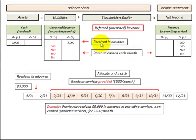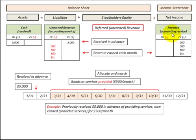To review: we receive a payment in advance of providing a service, so we credit unearned revenue and debit cash. Then as we begin to provide the goods or service, we reduce the unearned revenue and increase the revenue account, which becomes net income on the income statement. At the end of the period, that revenue gets closed into retained earnings, which becomes stockholders' equity on the balance sheet. That's the overview of how unearned revenue is converted into earned revenue.